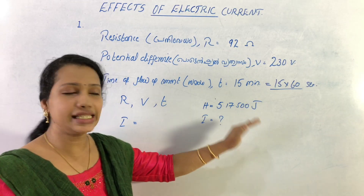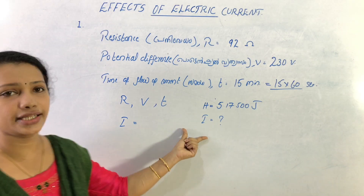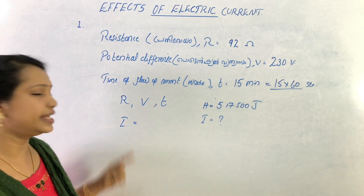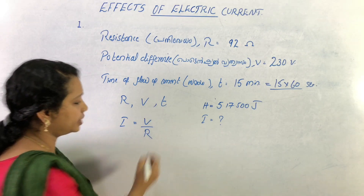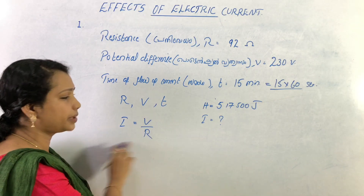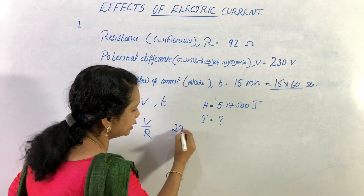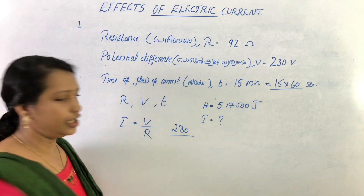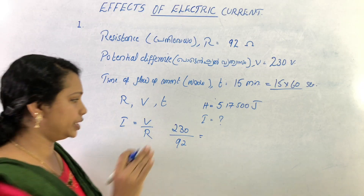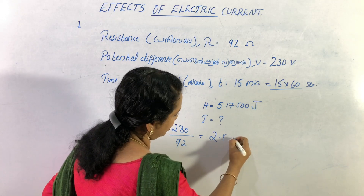Now we also find the current intensity in this circuit. Using I is equal to V by R, potential difference is 230 and resistance is 92. So the current is 230 divided by 92, which gives 2.5 amperes.